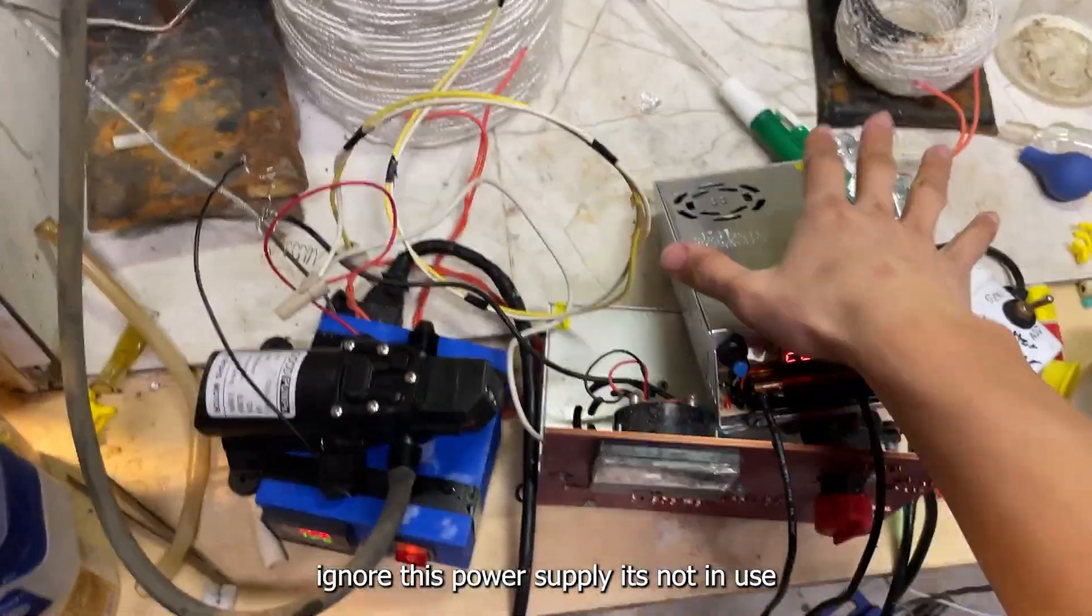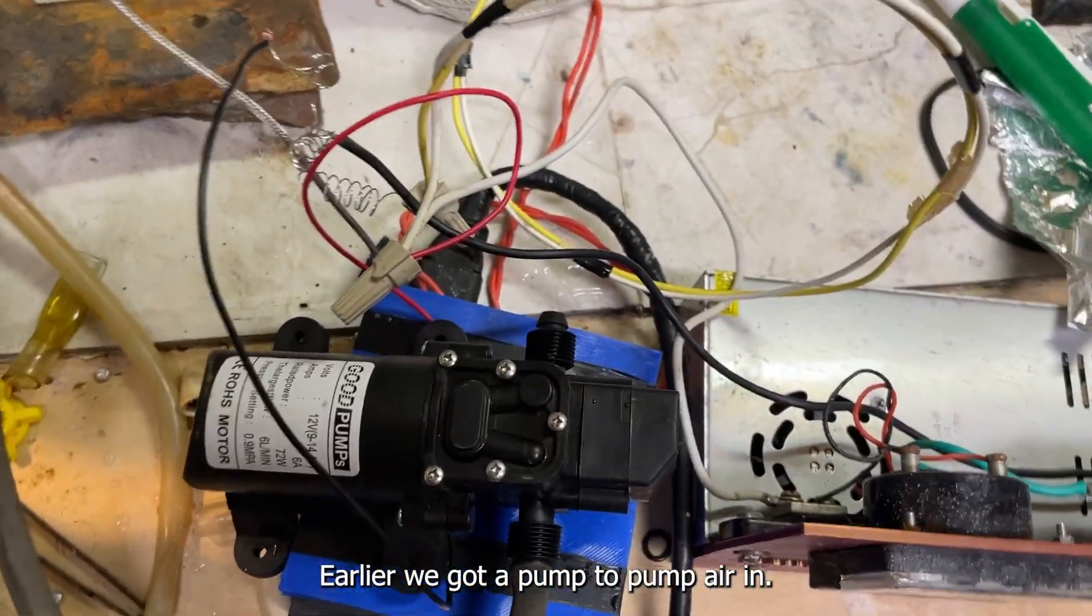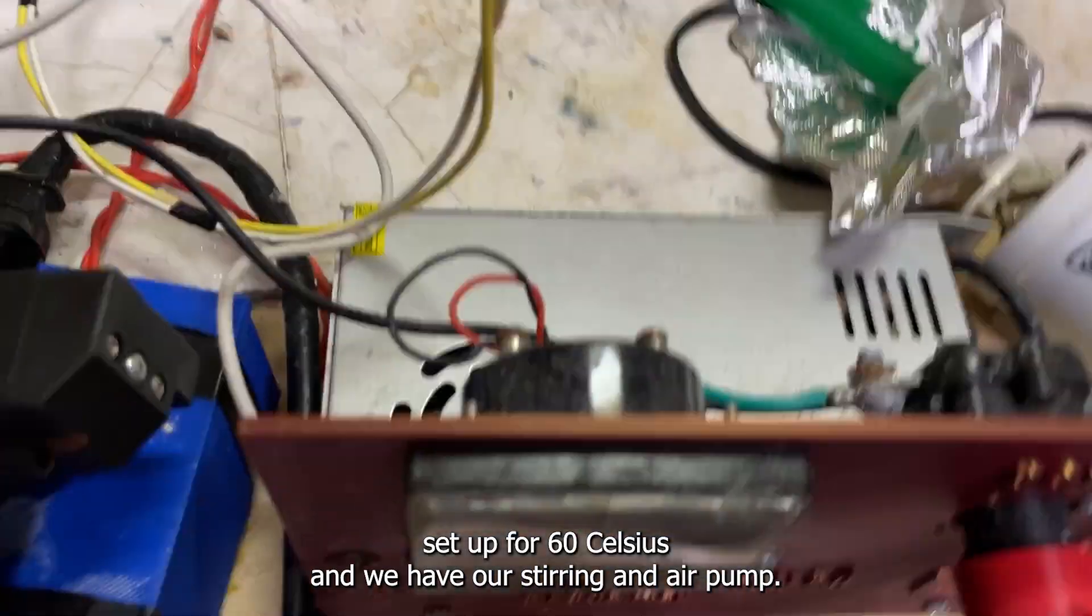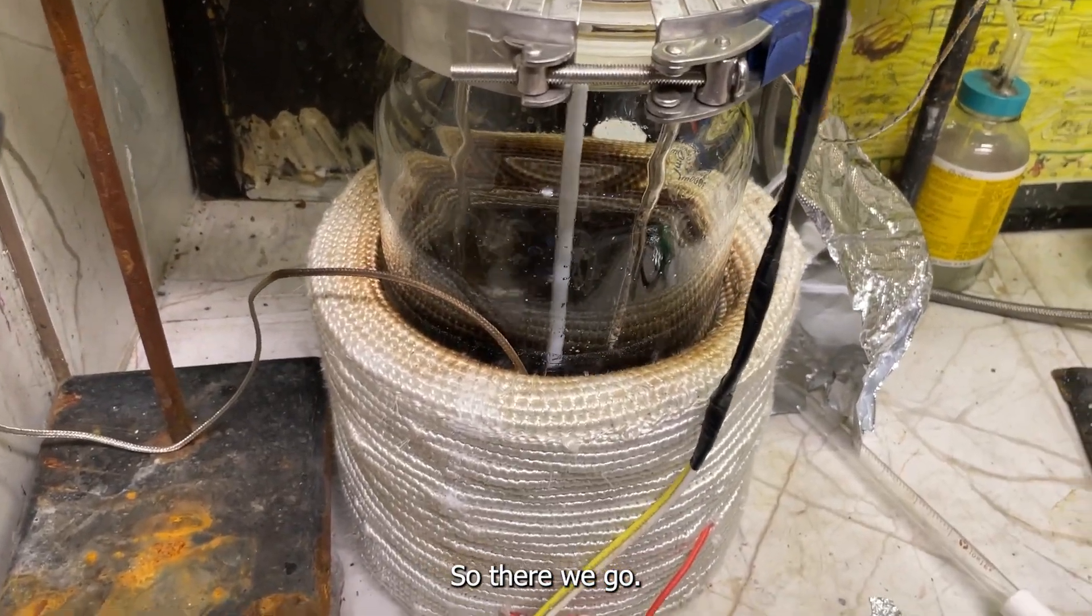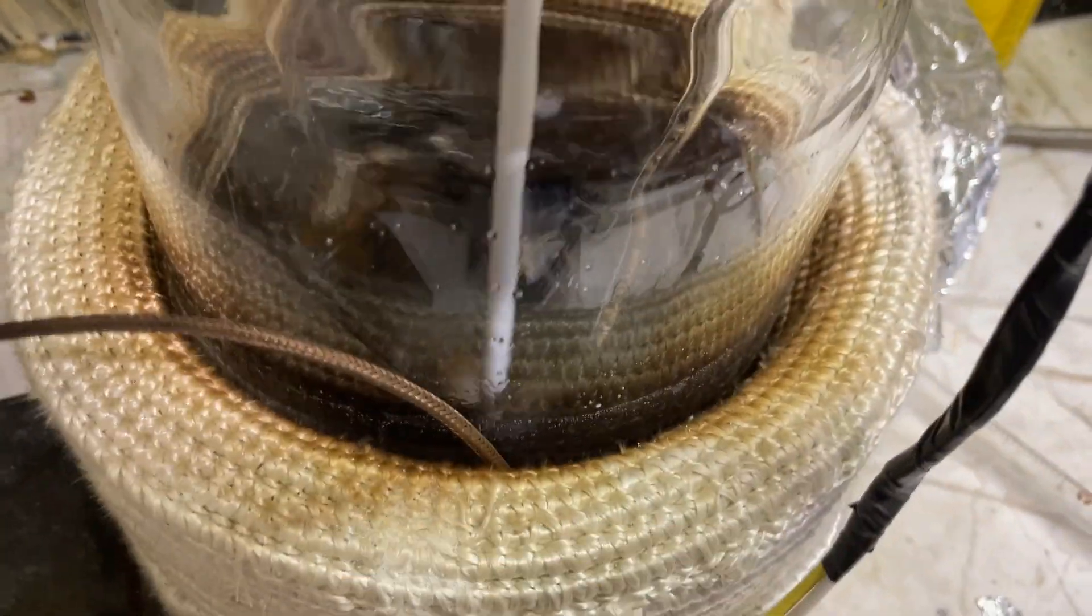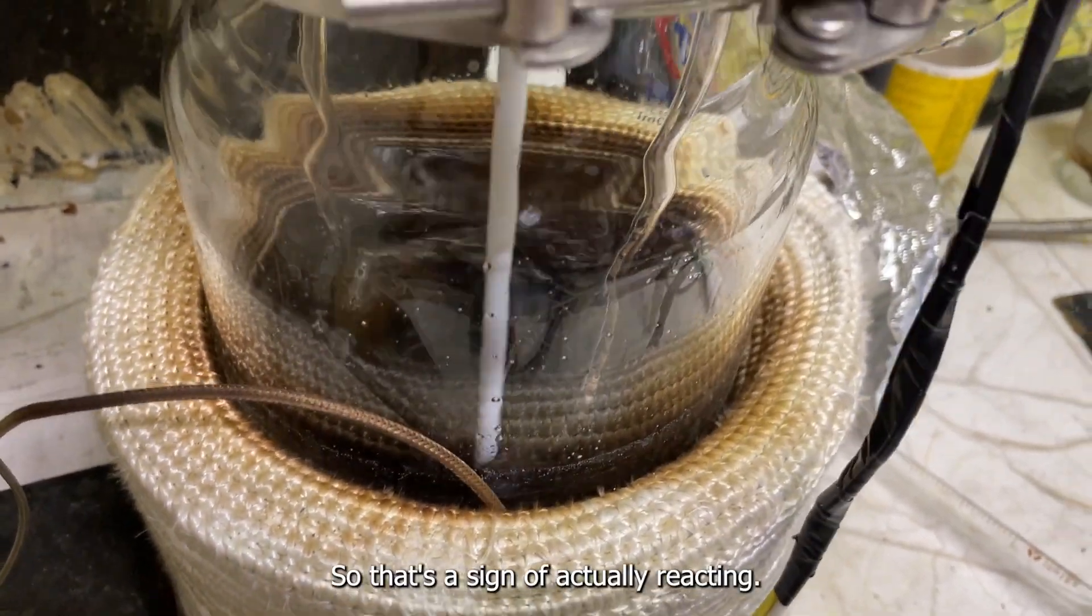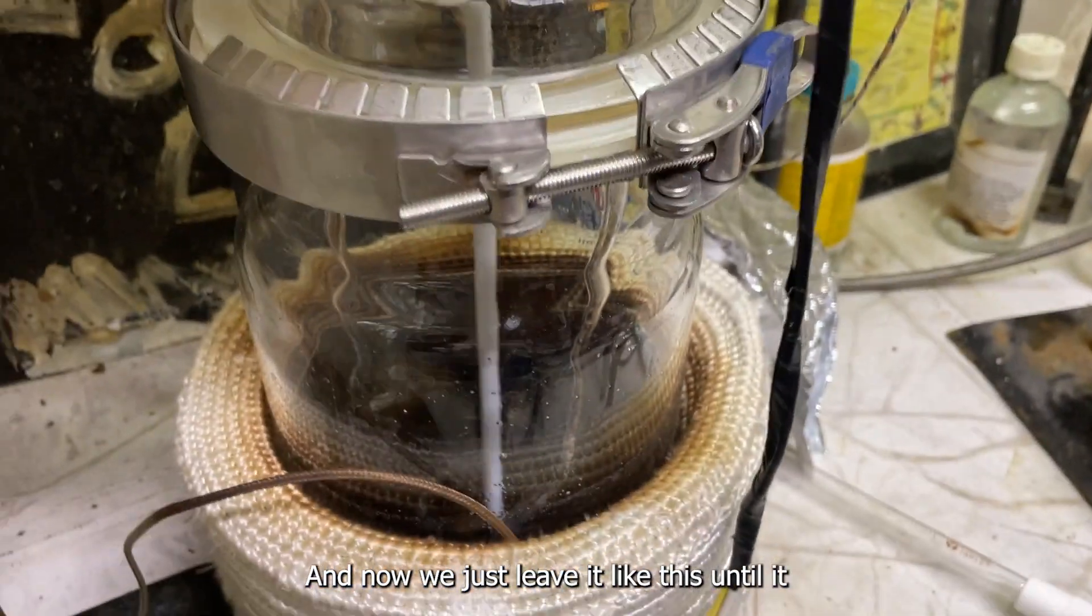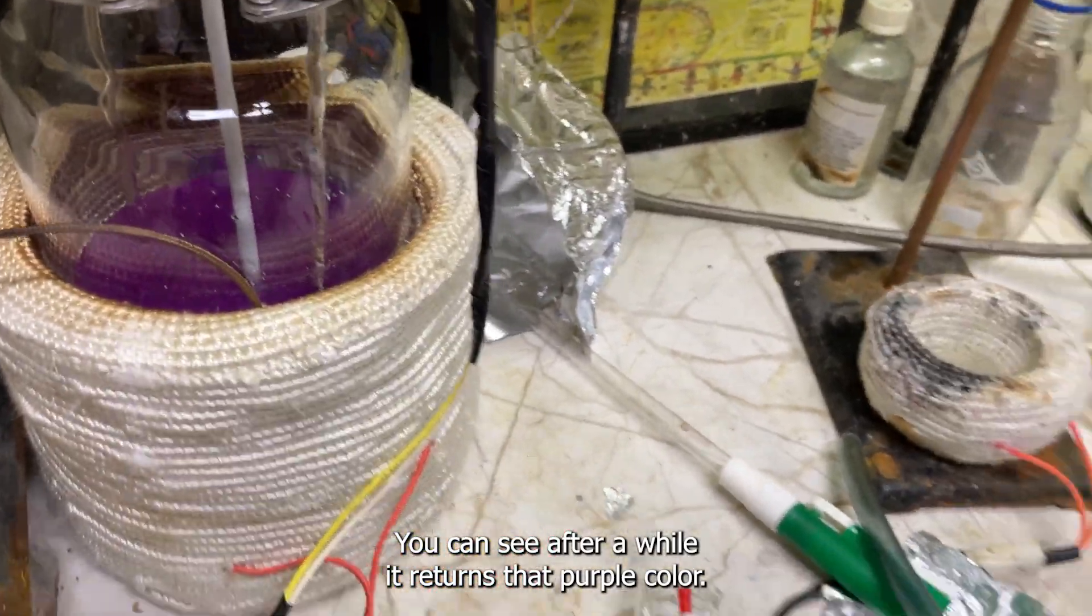Okay, secured the apparatus, ignore this power supply it's not in use. We got a pump to pump air in, we have our heating controller set up for 60 celsius, and we have our stirring and air pumps. You can see as I was setting up, I was letting it warm up, and you can see it change colors from that purplish color to this brownish color. That's a sign of it actually reacting. I would just leave it like this until it stops reacting, and after a while it returns to that purple color.